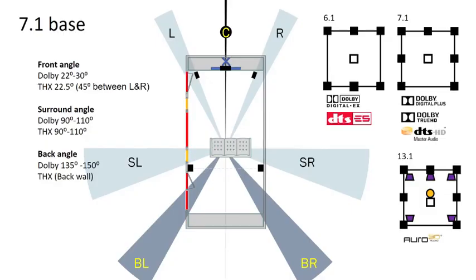Moving to 7.1, we add back channels. Dolby has these at 135 to 150 degrees, while THX simply states to place them on the back wall. Given the long length of my room, the Dolby angles are too wide unless I am willing to place my Polk LSIM bookshelves on pedestals. Knowing that is not an option with our kids sharing the space, I am opting for placement on the back wall cabinets, which is compliant with THX and not too far off Dolby specifications.